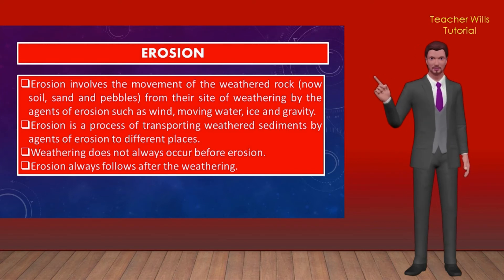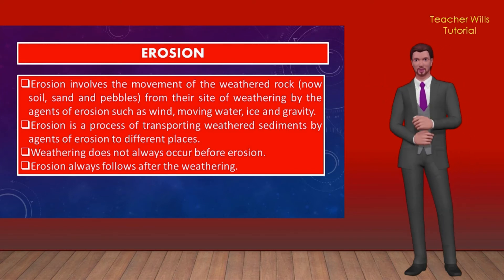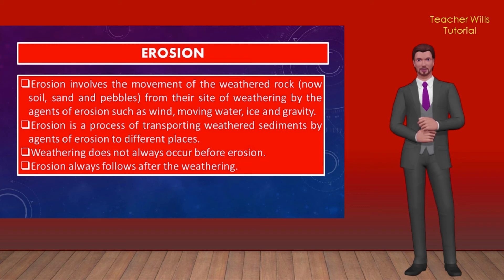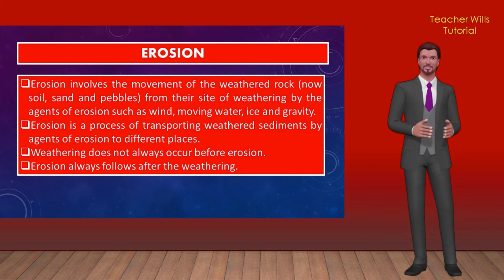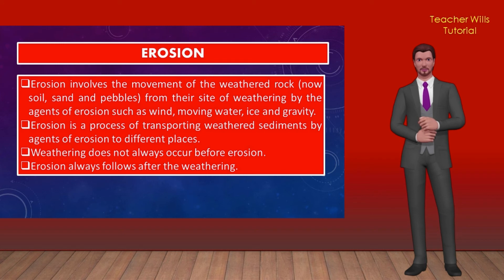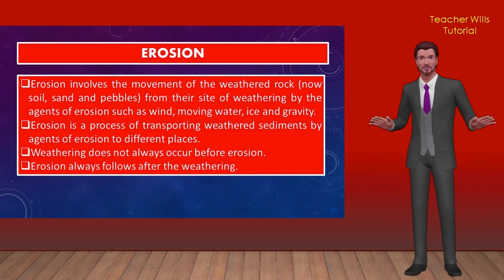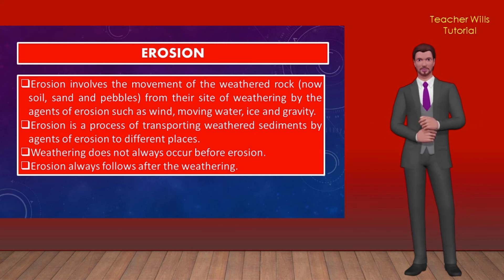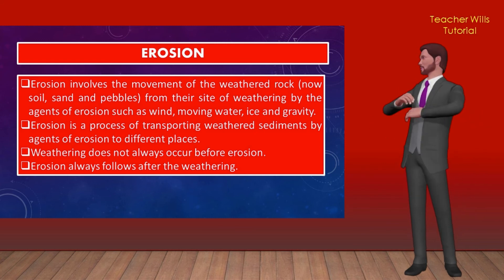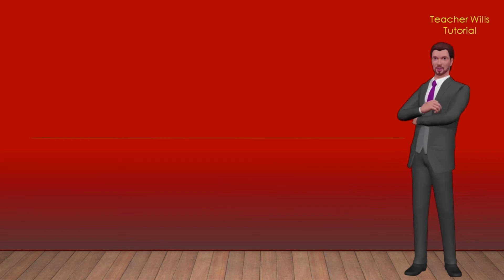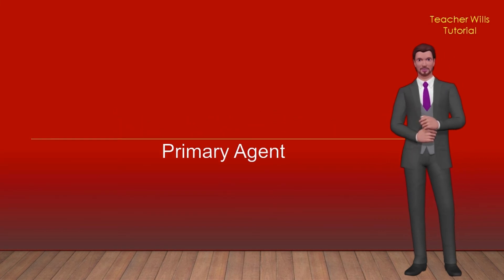Erosion involves the movement of weathered rock from its site of weathering by agents of erosion such as wind, moving water, ice, and gravity. Erosion is a process of transporting weathered sediments to different places. Weathering does not always occur before erosion, but erosion always follows weathering. Running water is the primary agent of erosion on Earth.